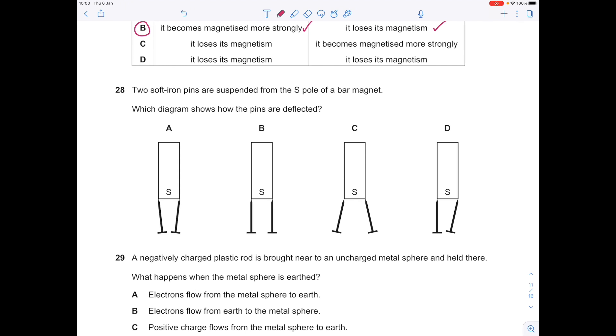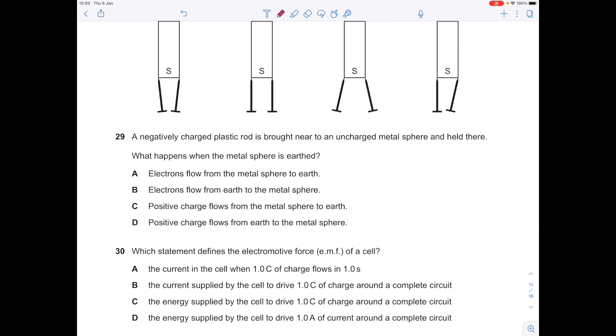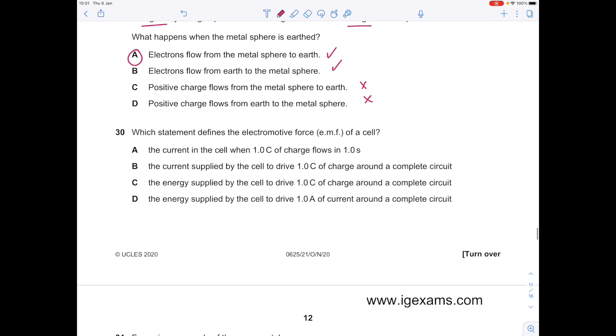A negatively charged plastic rod is brought near an uncharged metal sphere and held there. What happens when the metal sphere is earthed? Remember, it's only the electrons that can move, so that's why we're picking between A and B. In this case, those excess electrons will flow from the plastic rod to the metal sphere and to earth, so the answer is A.